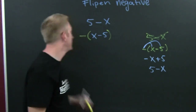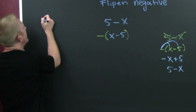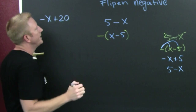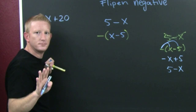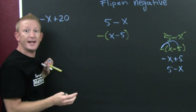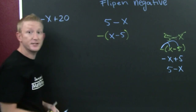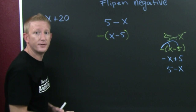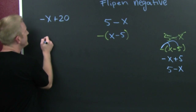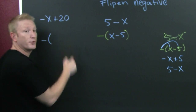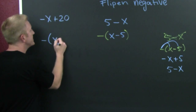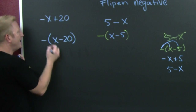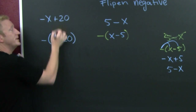One more thing. If I was up here and I had minus x plus 20, some books ask you to factor out a negative. So let's just factor out a negative — they don't tell you why. You're employing the flipping negative over there. You factor out the negative, and it changes both the signs on the inside. So this is x minus 20, just like that. Because if we distribute back in, we get the original.